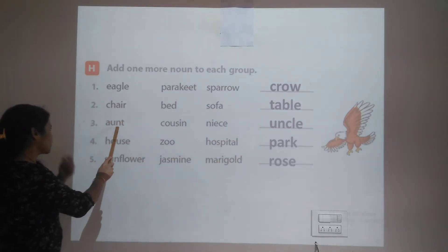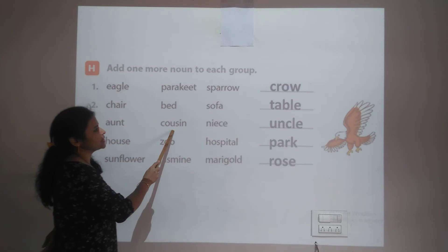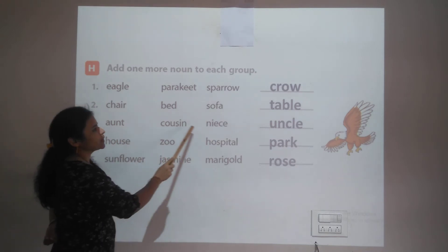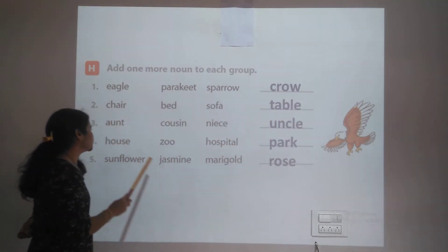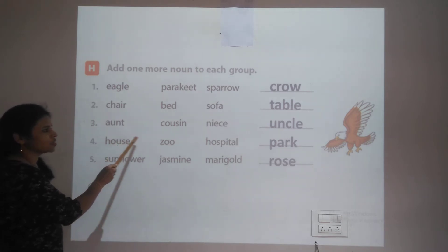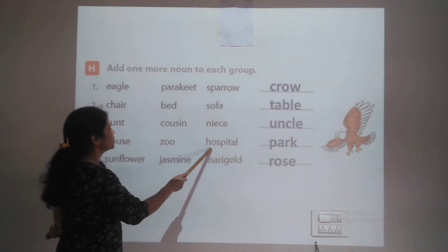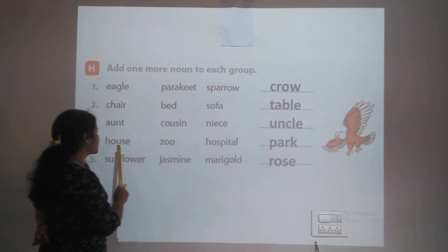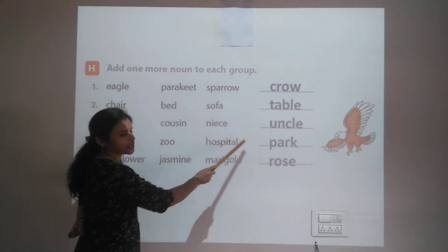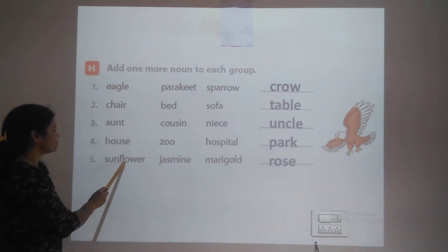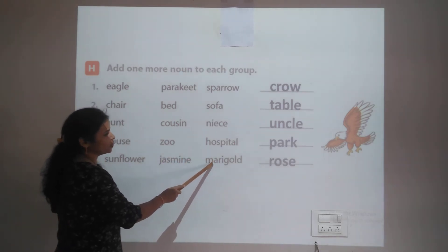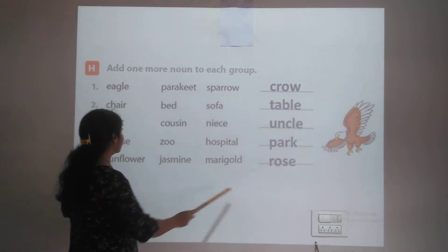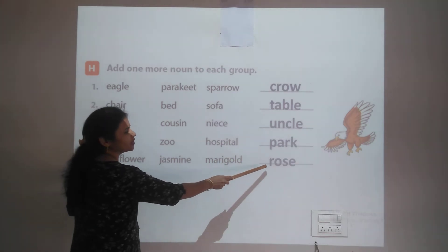Third group has family member names: aunt, cousin, niece — we add 'uncle'. Fourth group has place names: house, zoo, hospital — we add 'park'. Fifth group has flower names: sunflower, jasmine, marigold — we add 'rose'. So the groups are complete with one more noun each.